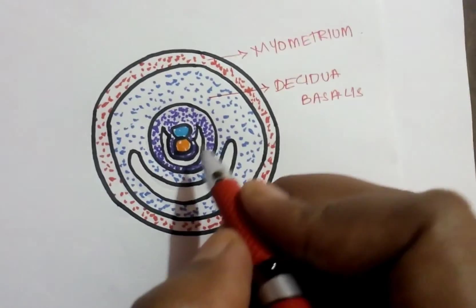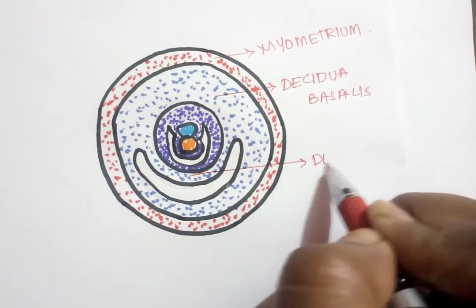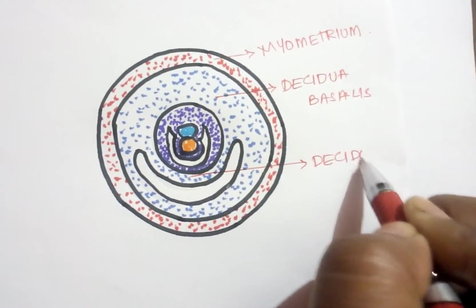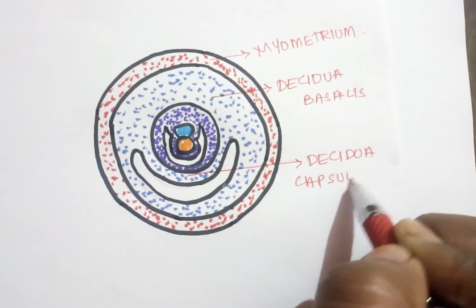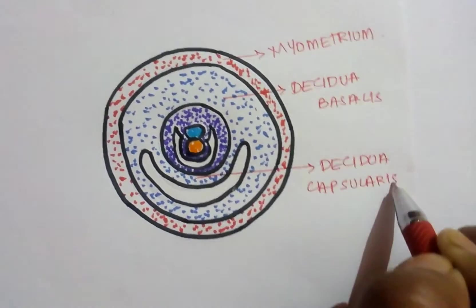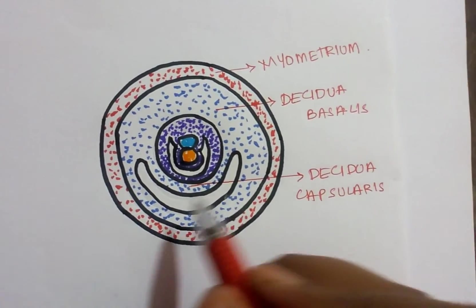And next, this part of decidua is called as decidua capsularis. This part of decidua, that is endometrium, will cover the embryo. Developing embryo is covered by this decidua capsularis.